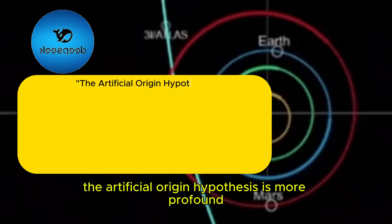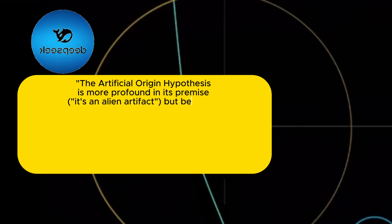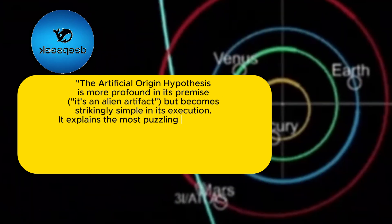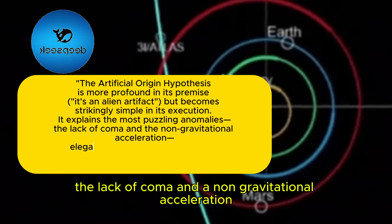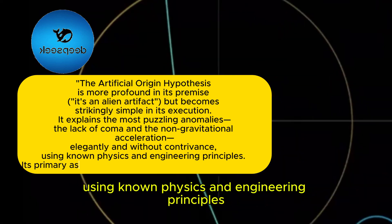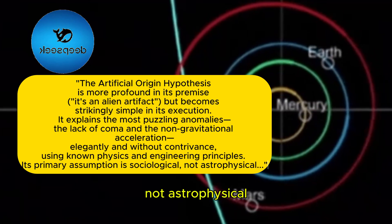The artificial origin hypothesis is more profound in its premise, it's an alien artifact. But becomes strikingly simple in its execution. It explains the most puzzling anomalies, the lack of coma and a non-gravitational acceleration, elegantly and without contrivance, using known physics and engineering principles. Its primary assumption is sociological, not astrophysical.